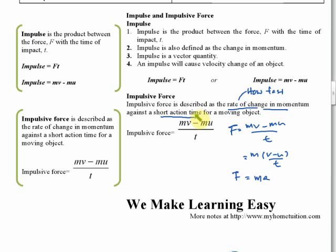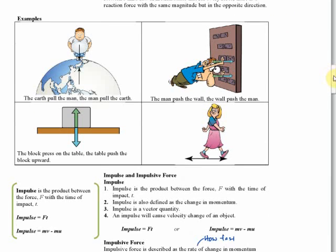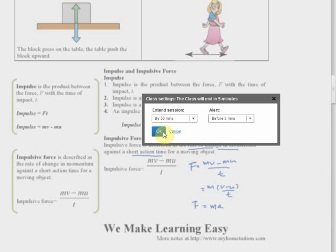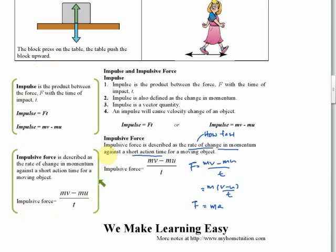You need to memorize the definitions for impulse and impulsive force. In the notes, definitions placed on the left-hand column are things you need to memorize. The notes have two columns: a large column on the right and a smaller column on the left. During exam time, when you don't have enough time to read everything, you can focus on the left-hand column to remember the key definitions.